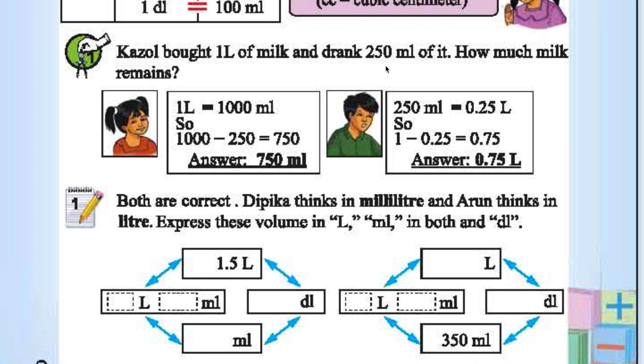Kazol bought 1 liter of milk and drank 250 ml of it. How much milk remains? 1 liter is 1000 ml. 1000 minus 250 is 750. So 750 ml remains.